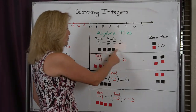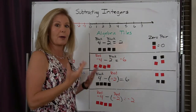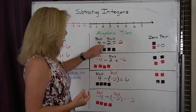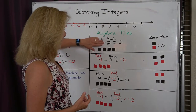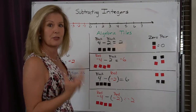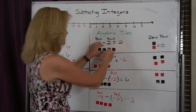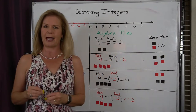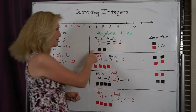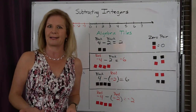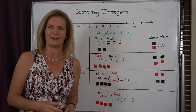For 4 minus 2, I put down four black tiles. From that, I've got to take away two positives, so two blacks. When I take away those two blacks, you can see I have two blacks left — therefore my answer is a positive 2.